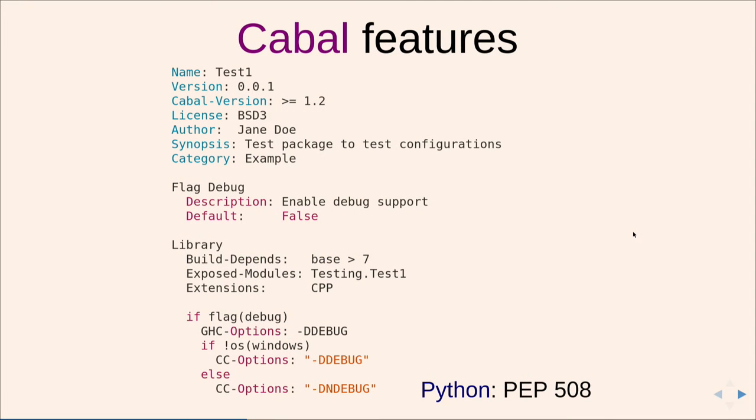In Python we have PEP 508, which is environment markers. For example you have a dependency and you can say this dependency is only on Python 3 and Windows and so on. This is already supported in pip but not many people are using it because they don't know about it. The idea is that you don't write imperative Python code saying if we're on Windows blah blah blah — you just say this dependency and the marker is Windows and you're done. This gives everyone else the possibility to parse this marker and do something with that information.